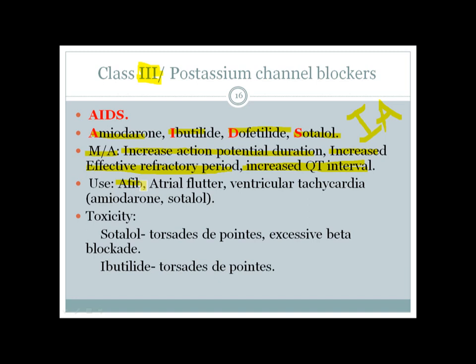Class 3 agents can be used for atrial fibrillation, atrial flutter, and ventricular tachycardia. For ventricular tachycardia specifically, amiodarone and sotalol are preferred. Sotalol causes torsades de pointes because it increases the QT interval, similar to class 1a agents.